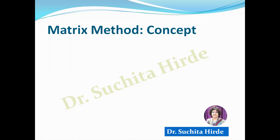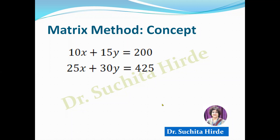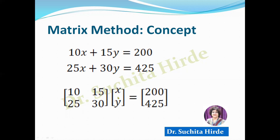Now we will start with a very simple example of simultaneous equations and see how we can convert these equations into matrix form. Suppose you have the equation 10x plus 15y equals 200, and a second equation 25x plus 30y equals 425, where x and y are variables. Let us see how we can write these equations in matrix form by placing the constants in a matrix, the variables here, and the right-hand side like this.